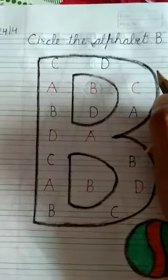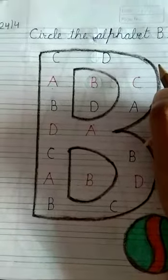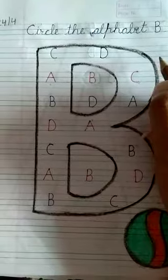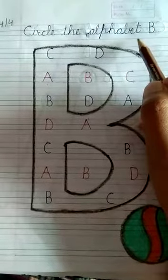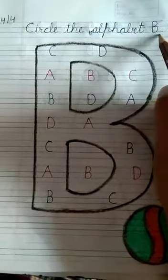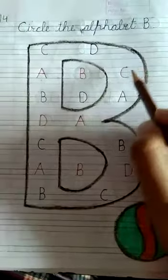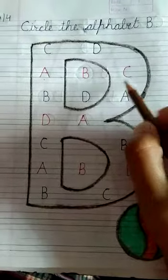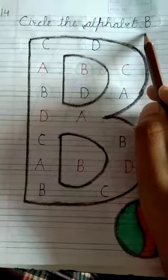Good morning, Nancy class. How are you? I hope you all are fine. Today we will revise alphabet B. You have to find out alphabet B, then make a circle.